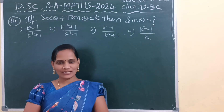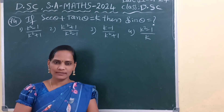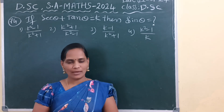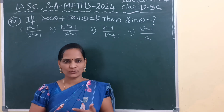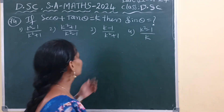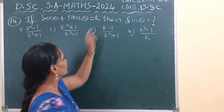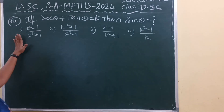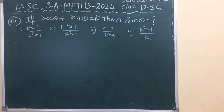Hi, hello, welcome to Master Channel. I hope you are fine. In this video I am going to explain DSC mass essay question paper 2024. I will explain a few questions today. Let us see what those questions are and how to solve them. The first question is: if secant theta plus tan theta is equal to k, then what is the value of sine theta? The options are: k squared minus 1 over k squared plus 1, and k squared plus 1 over k squared minus 1.